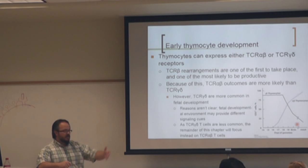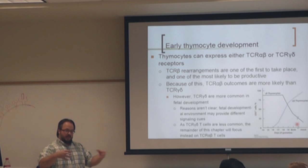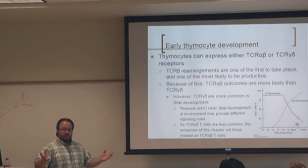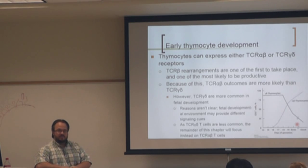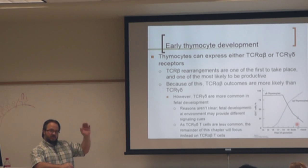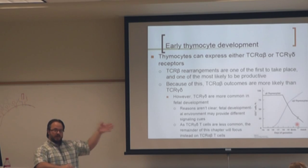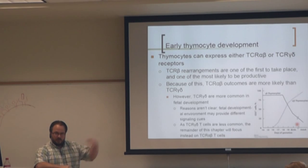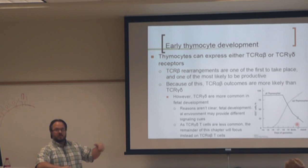If they have a successful gamma delta, they move on. There's no need to recombine further because they've already made a successful receptor. If you have a successful beta, it will combine with the surrogate alpha and move on — it won't become a gamma delta. But if you don't have a successful beta, it's not going to go on and make alpha; it's going to go on and make the gamma and delta chains.